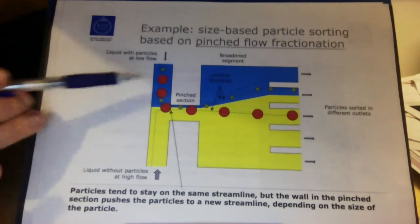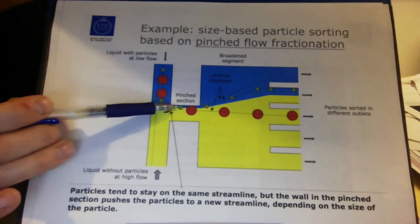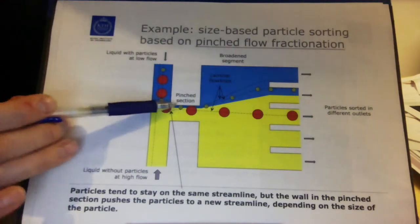And if I take a red particle that is even bigger than the green particle, the red particle, the center of it, is forced to even be further away from the wall than the green ones.